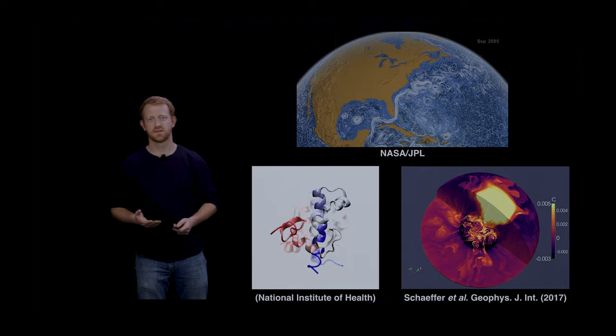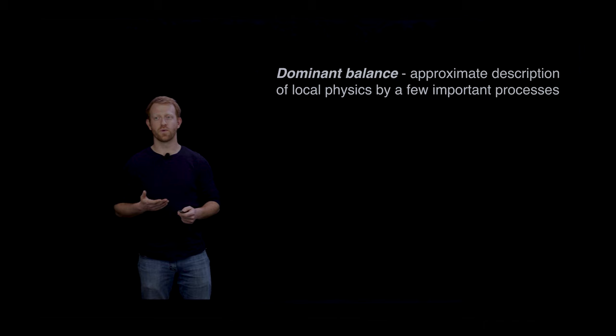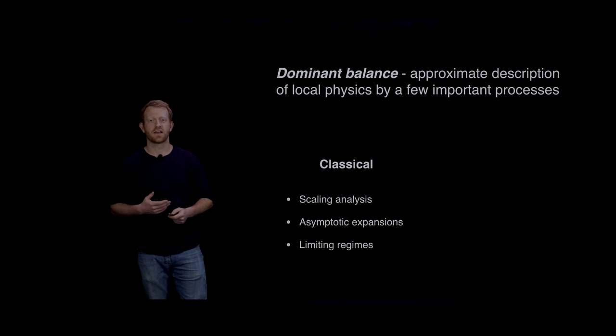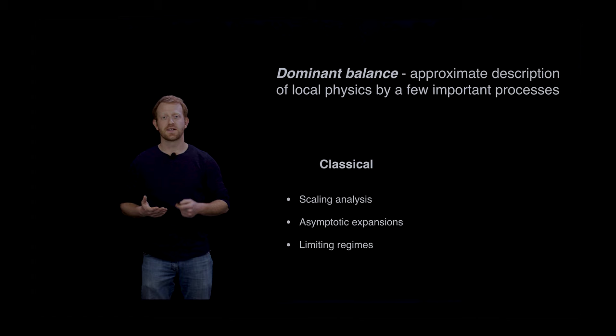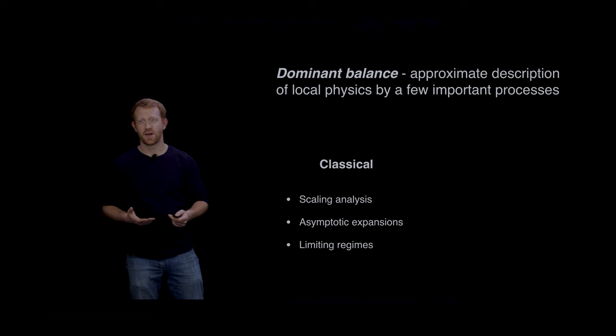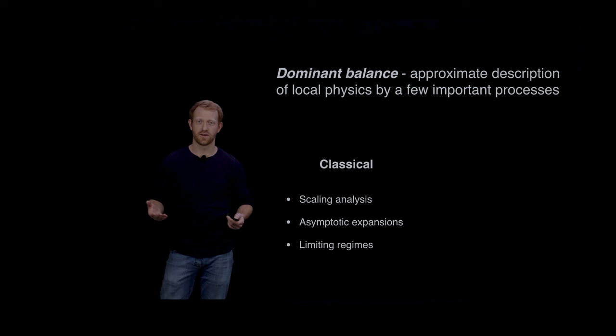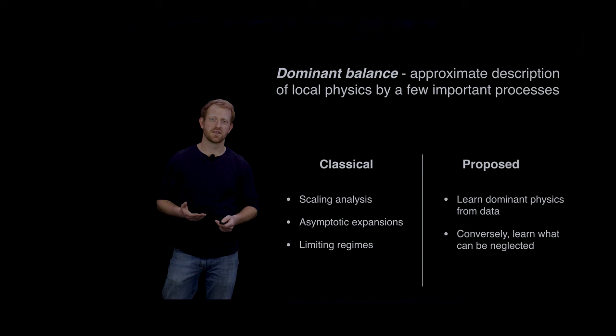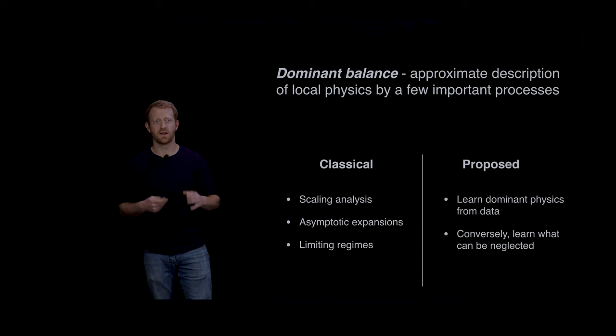This is the heuristic we call dominant balance, and in some ways it's been a cornerstone of the way we think about modeling physical systems. Classically we do this with something like an asymptotic scaling analysis, but as the systems and conditions we study become increasingly complex, it's not always easy to do this with pen and paper. Our goal was to develop a method that can use data to extend this approach to non-asymptotic regimes.